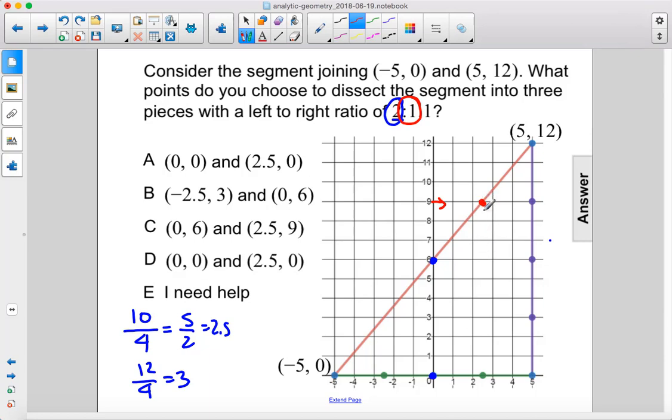So what are these two points? We have 0, 6, and we have 2.5, 9. So that is C.